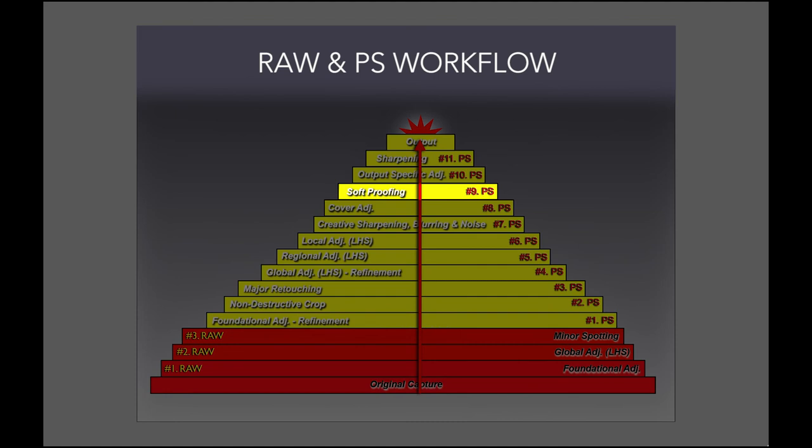With my adjustments complete I now soft proof my image and create a set of minor adjustments which is what we call output specific adjustments, and these compensate for the specific profile's inability to provide 100 percent accurate color.